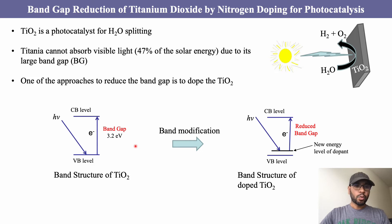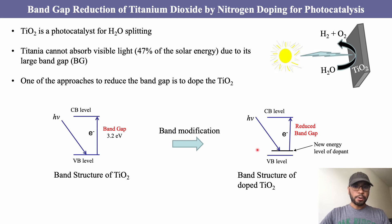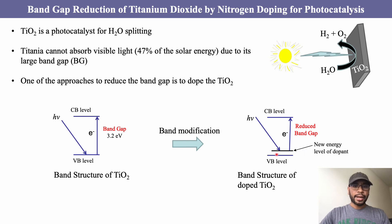One of the ways to enhance the visible light absorption of titanium dioxide is to reduce the band gap. The idea is that if a foreign element such as a nitrogen atom is introduced into the lattice of titanium dioxide, this nitrogen substitutes oxygen and forms a new energy band just above the valence band of titanium dioxide.